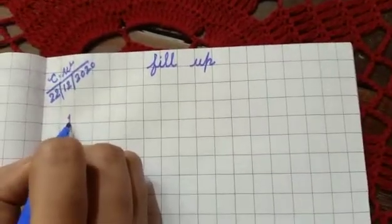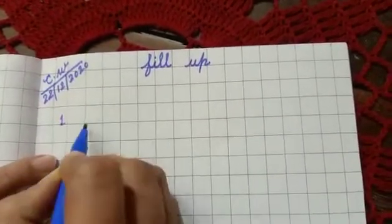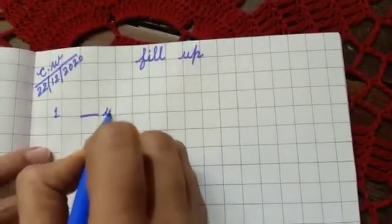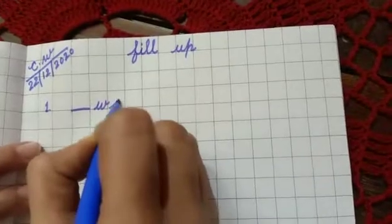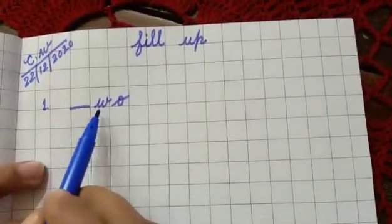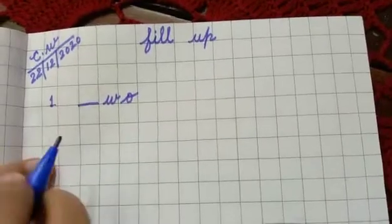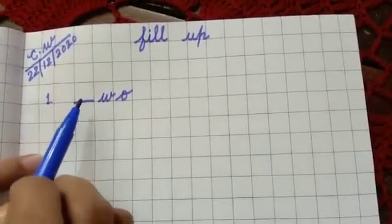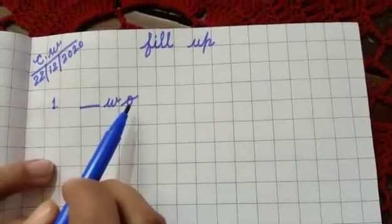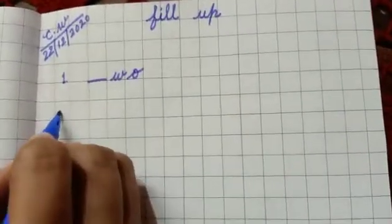Now here number one. You see dash W O. So what you will write here? T W O, 2. Okay, write by yourself. Now next one.